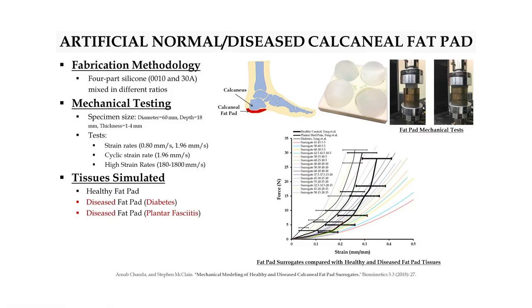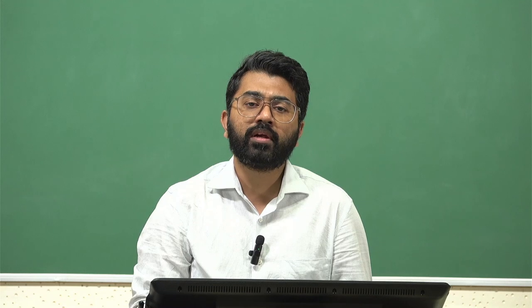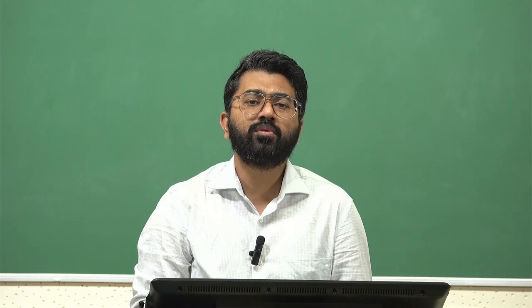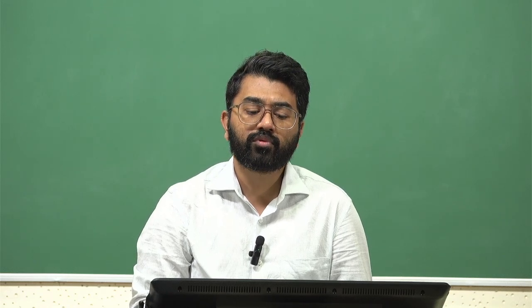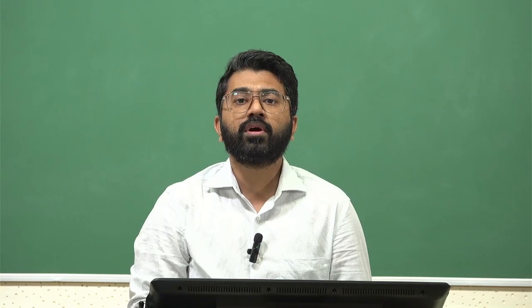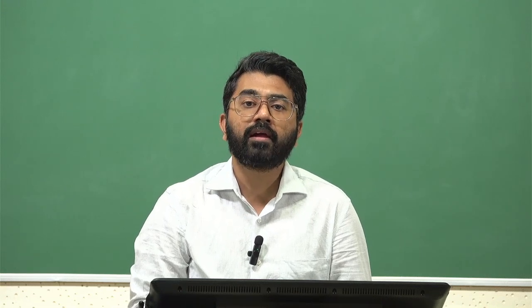The next soft tissue simulant is for the calcaneal fat pad. The calcaneal fat pad is a natural soft tissue which is there at the bottom of your heel. It acts as a cushion while you are walking, running, and doing all daily activities. It undergoes a lot of cyclic and fatigue kind of loading cycles throughout your lifetime.